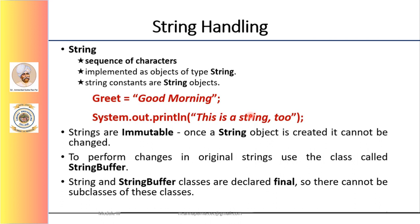Implementing strings as built-in objects allows Java to provide a full complement of features that makes string handling convenient. For example, Java has methods to compare two strings, search for a substring, concatenate two strings, and change the case of letters within a string. Also, string objects can be constructed in a number of ways, making it easier to obtain a string whenever needed.